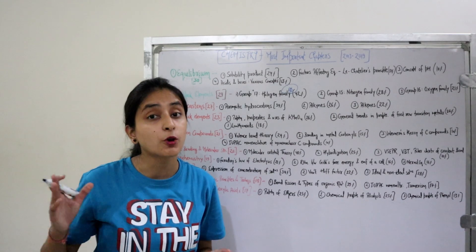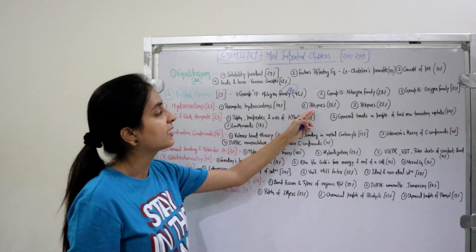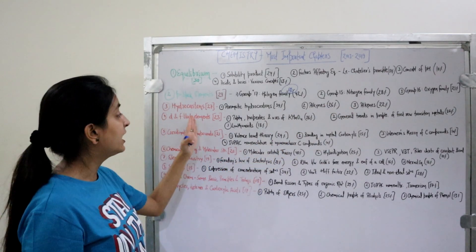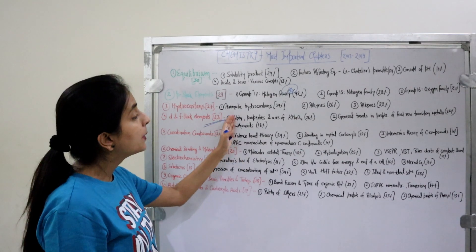Hydrocarbons: 27 questions from past 7 years. Most important topics: Aromatic Hydrocarbons, Alkenes, and Alkynes.